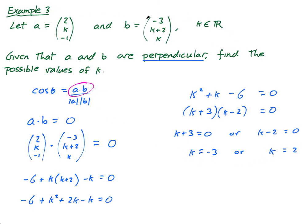Just check. Go back to the question. K has to be an element of the real numbers. Is negative 3 a real number? Yes. Is 2 a real number? Yes. So they are our two solutions. Done.